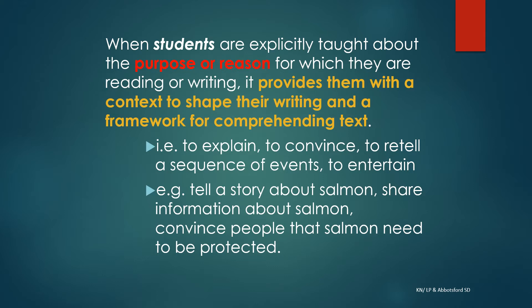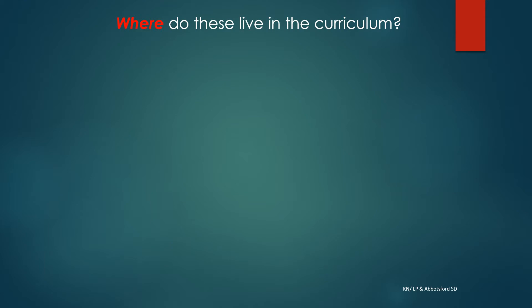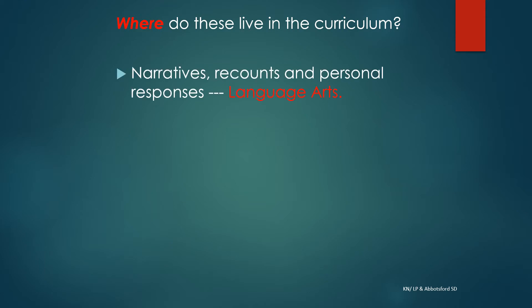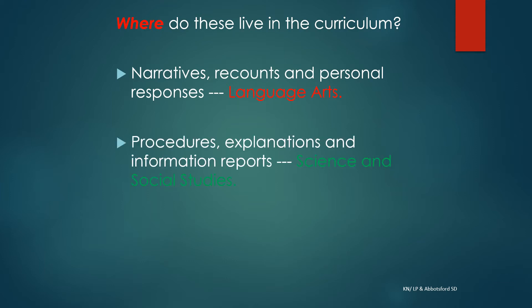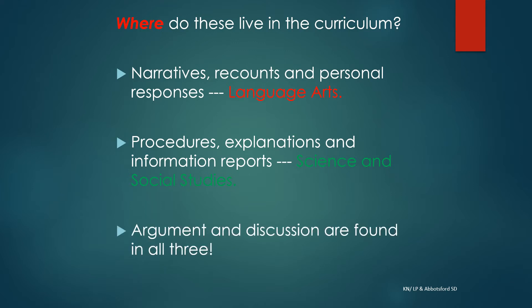An example of this might be writing about salmon. One might tell a story about salmon, or share information about salmon, or try to convince people that salmon need to be protected. So where do these genres live in the curriculum? We tend to see narratives, recounts, and personal responses in the language arts curriculum. Procedures, explanations, and information reports tend to be in the science and social studies curriculum. Argument or discussion are found in all three.